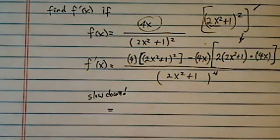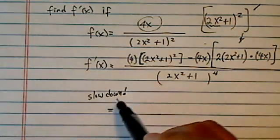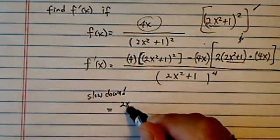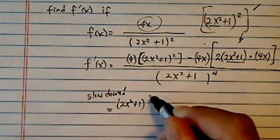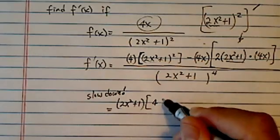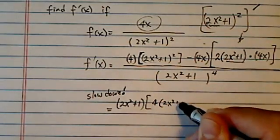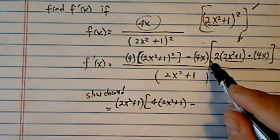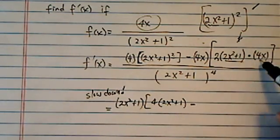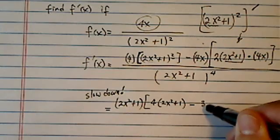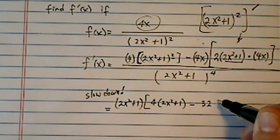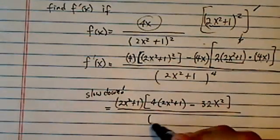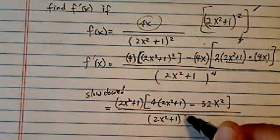First thing I'm going to do is I've spotted there's a common factor, and I'm going to pull it out: 2x squared plus 1. Then first one left was 4 times 2x squared plus 1 because I had a square. Minus, 4 times 2 times 4 is 32, and I have x squared left.